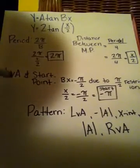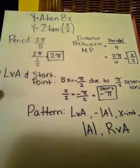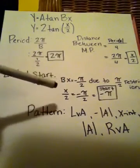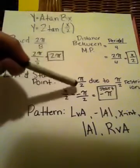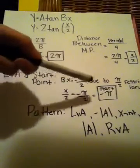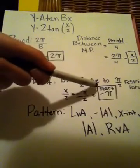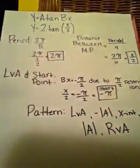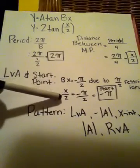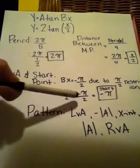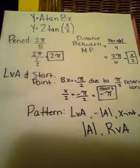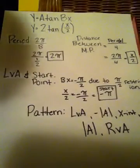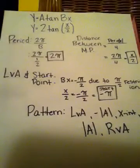And then, we need our left vertical asymptote and our starting point. To find our starting point and left vertical asymptote, we set bx to negative pi over 2, which is due to our restriction on our domain. So, when we set x over 2 equal to negative pi over 2, we end up with negative pi, which is our starting point and our left vertical asymptote.